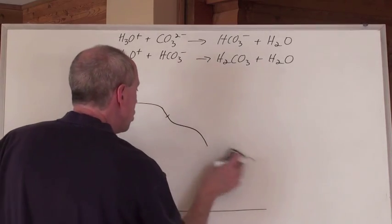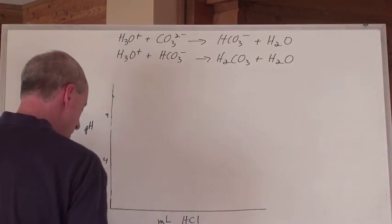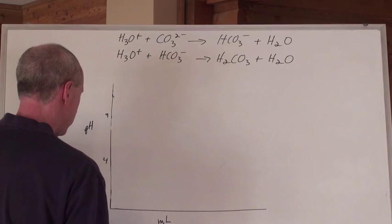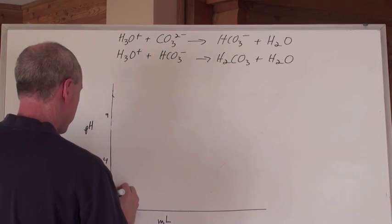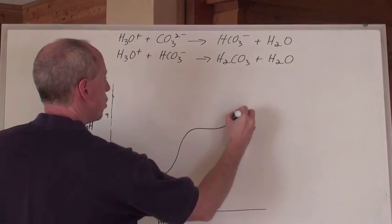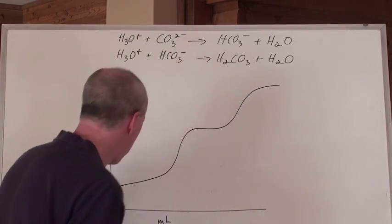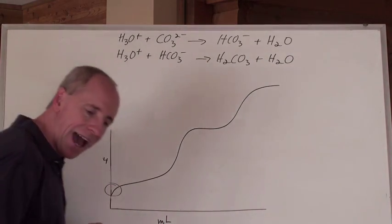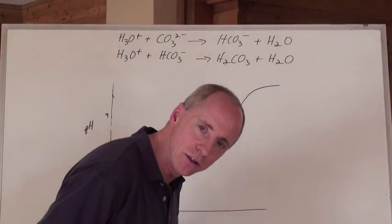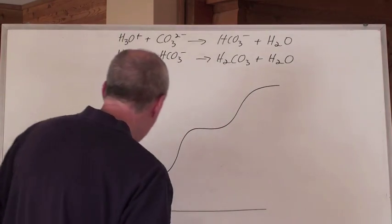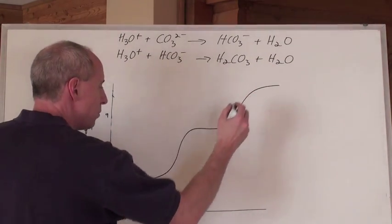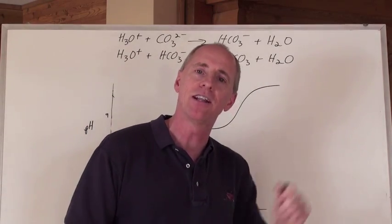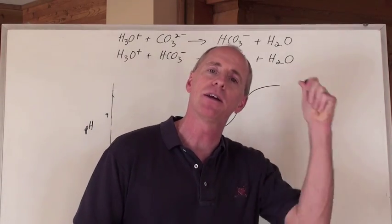If somebody shows you a titration curve that looks like this, you're going to say: I've got a weak acid in my solution — because of that initial shape — and two bumps, which means it's a diprotic weak acid being titrated by a strong base.